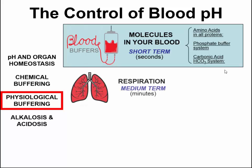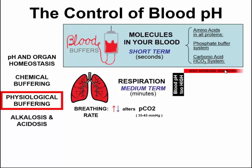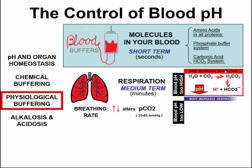In the medium term, changes to respiration rate can improve and change the blood pH, because breathing rate alters the partial pressure of carbon dioxide, which can then change the carbonic acid levels within the blood. Blood that's got too high a pH causes the body to automatically decrease its respiration, changing the equilibrium to produce a drop in pH through the production of hydrogen ions and bicarbonate. Blood that's got too low a pH results in the body increasing respiration, causing a change in the equilibrium, reducing the hydrogen ion concentration and increasing the partial pressure of carbon dioxide.